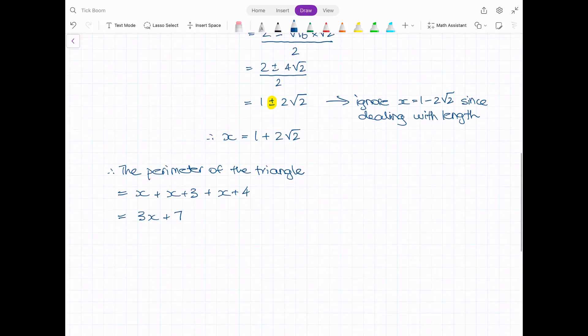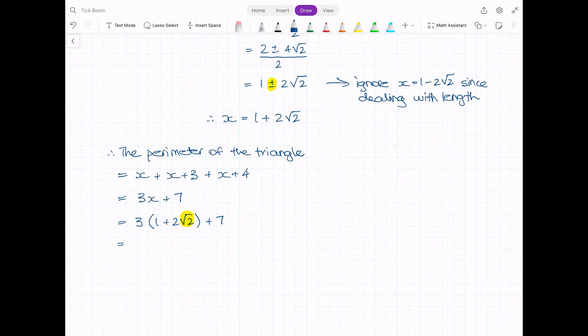If I substitute my exact value of x, I'll have 3 times (1 + 2√2) + 7. I can clean this up if I treat radicals in a similar way to the way we treat unknowns in algebra or pronumerals. I'll expand these brackets first and say we'll have 3 + 6√2 + 7.